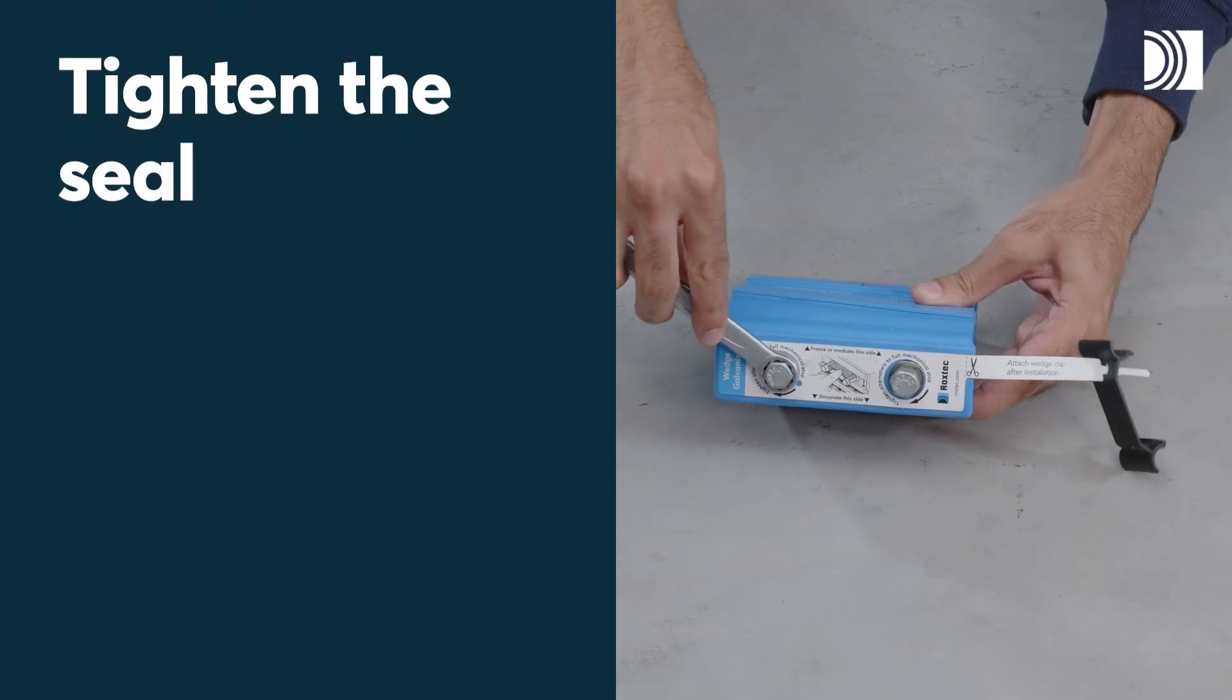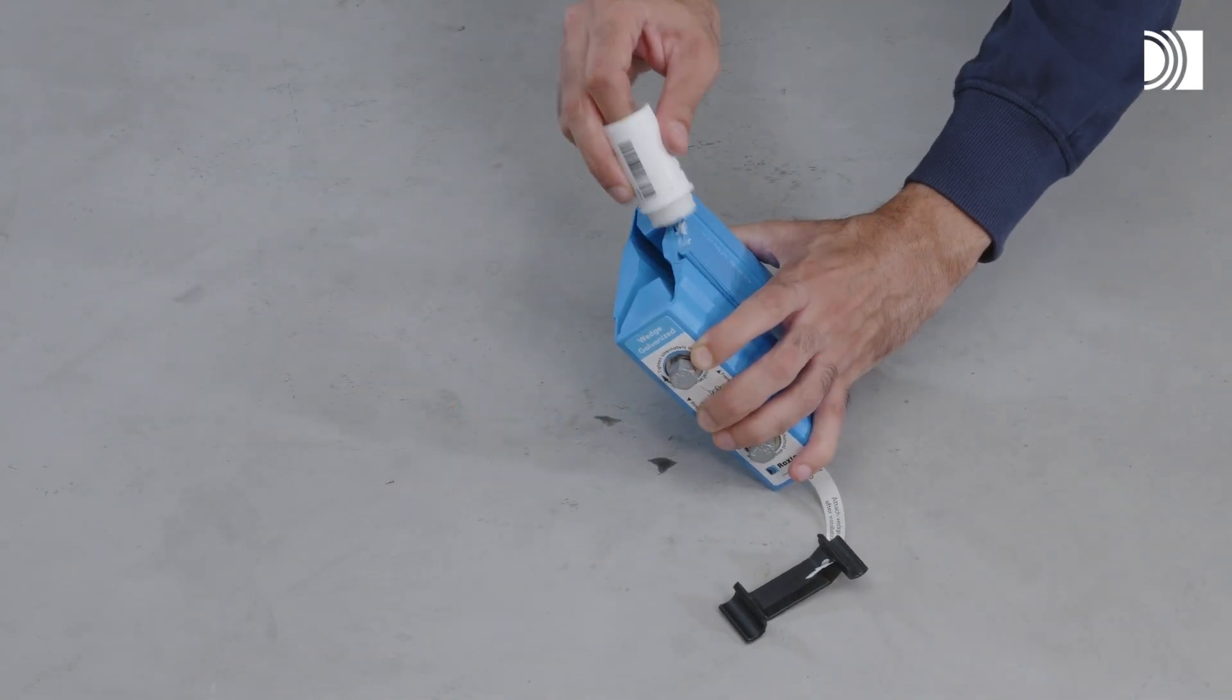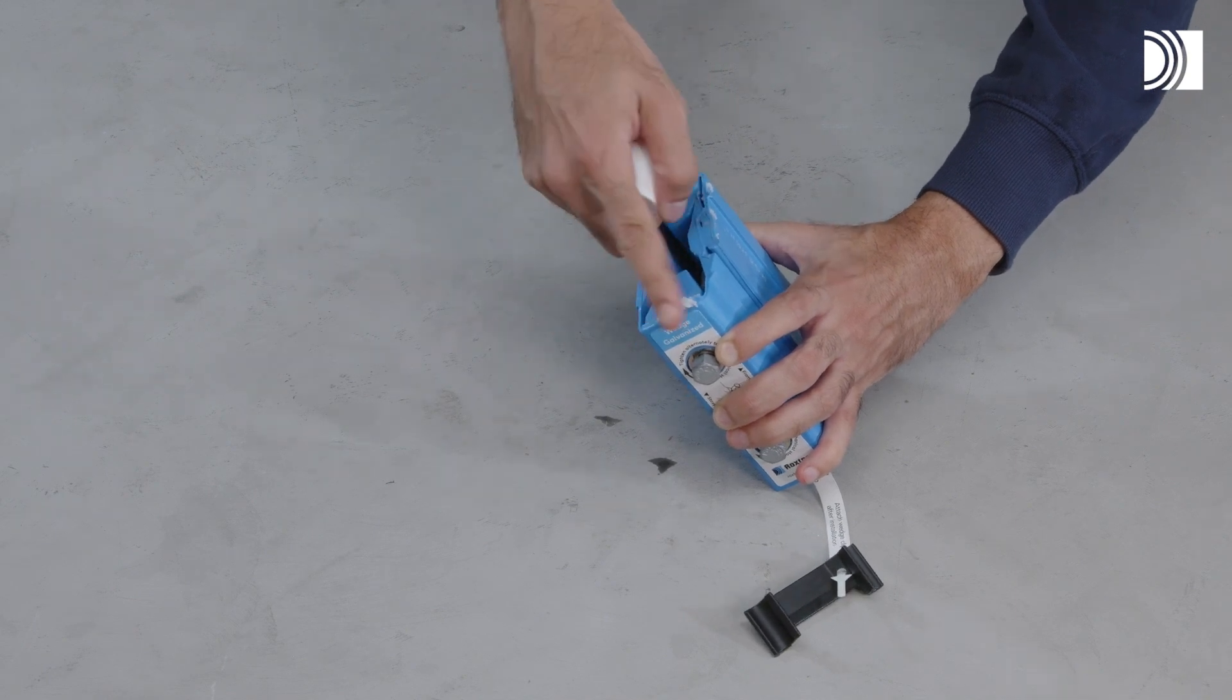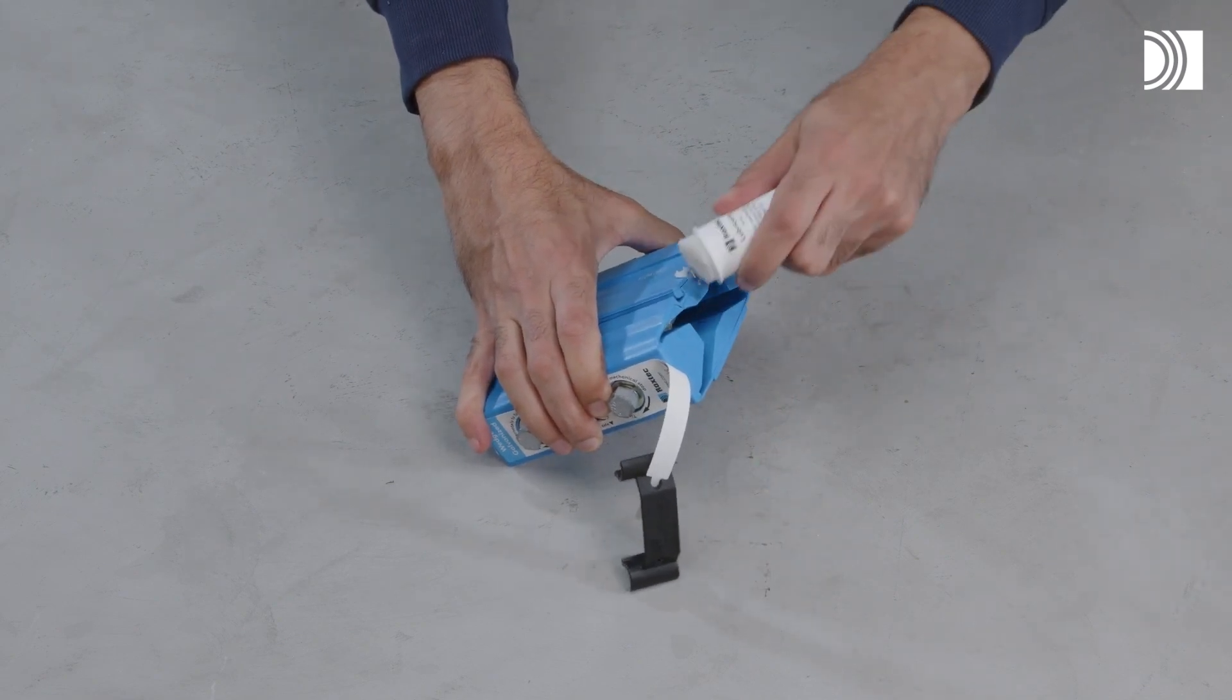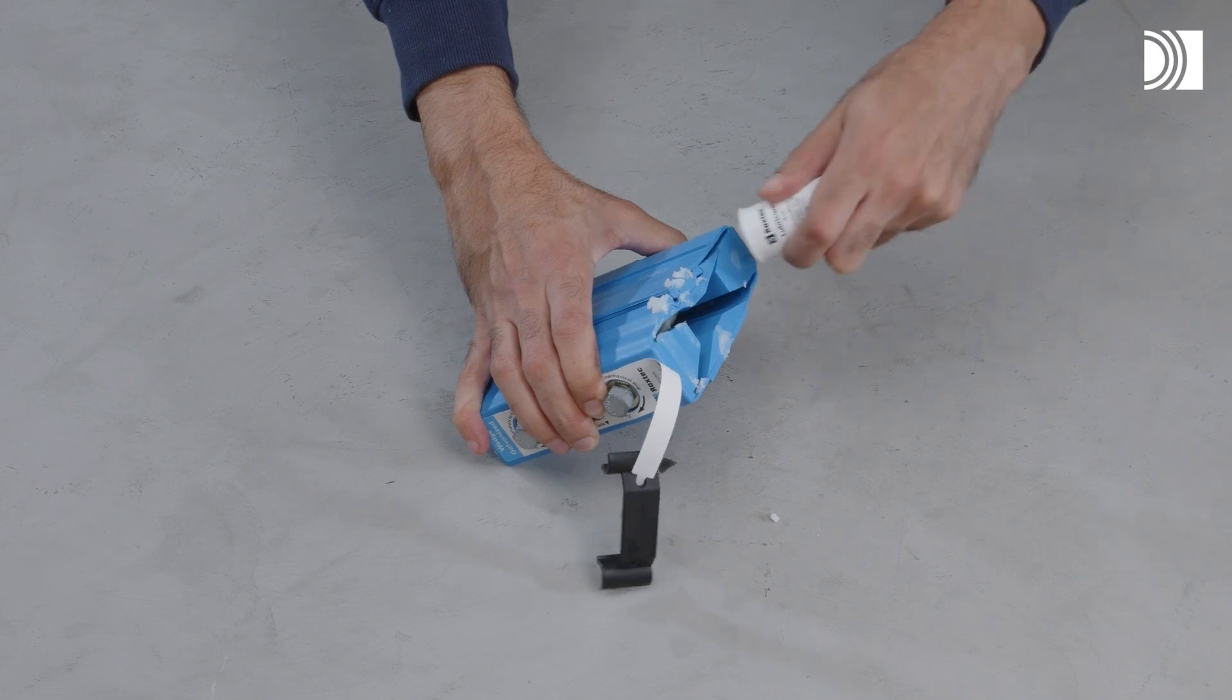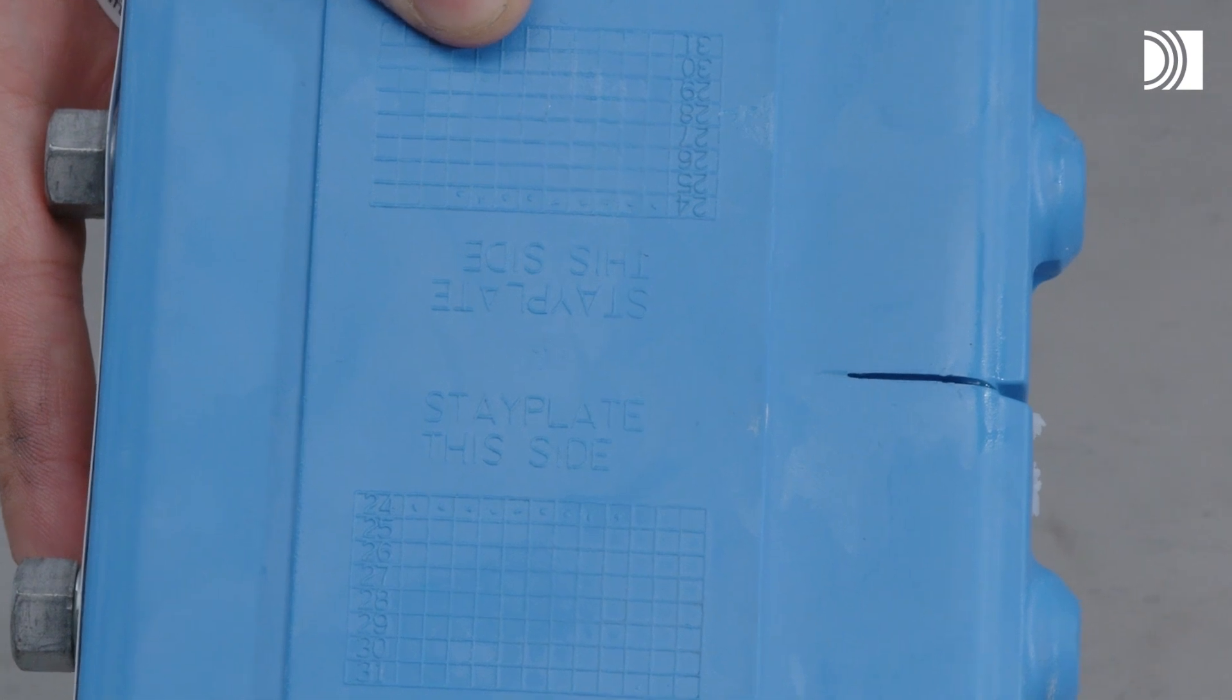Tighten the seal. Turn the screws of the wedge counter-clockwise to full stop before inserting it. Lubricate the short sides of the wedge. The wedge face marked stay plate this side shall face a stay plate.